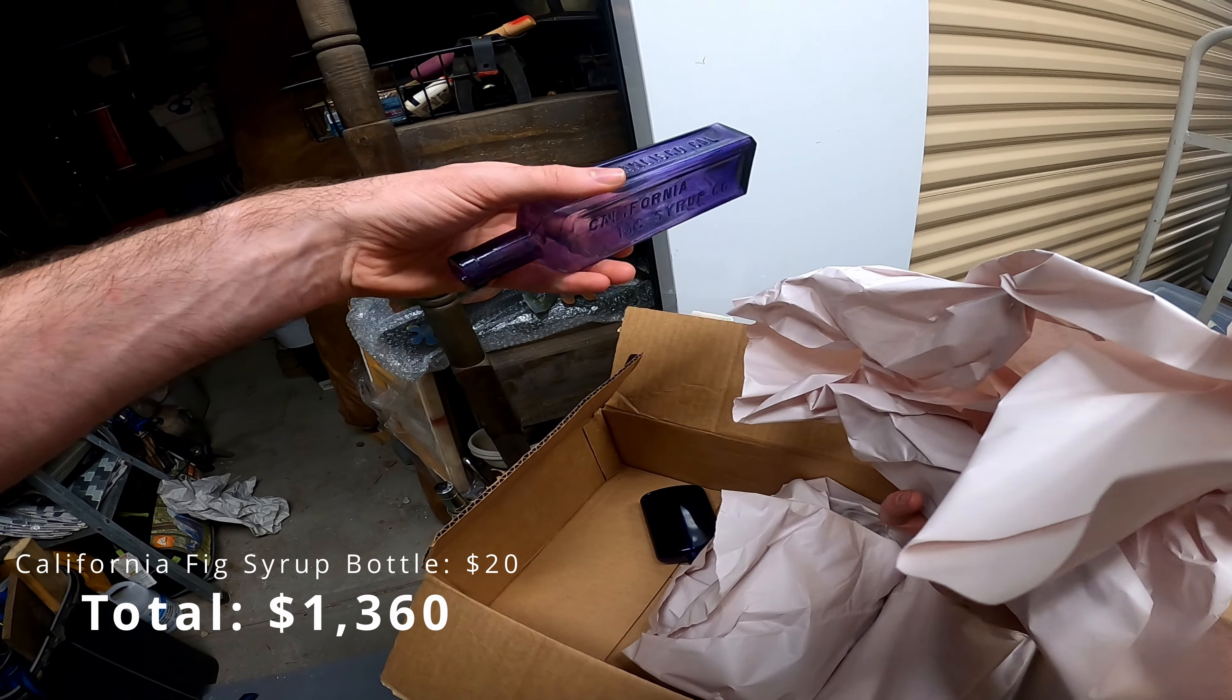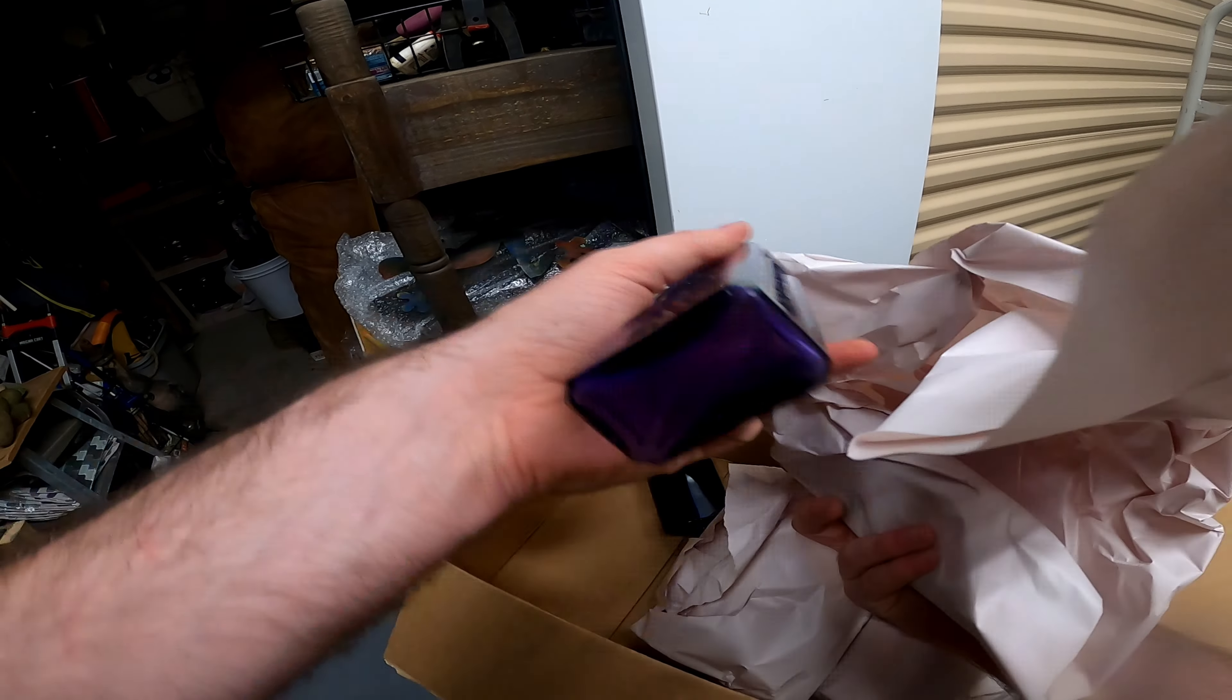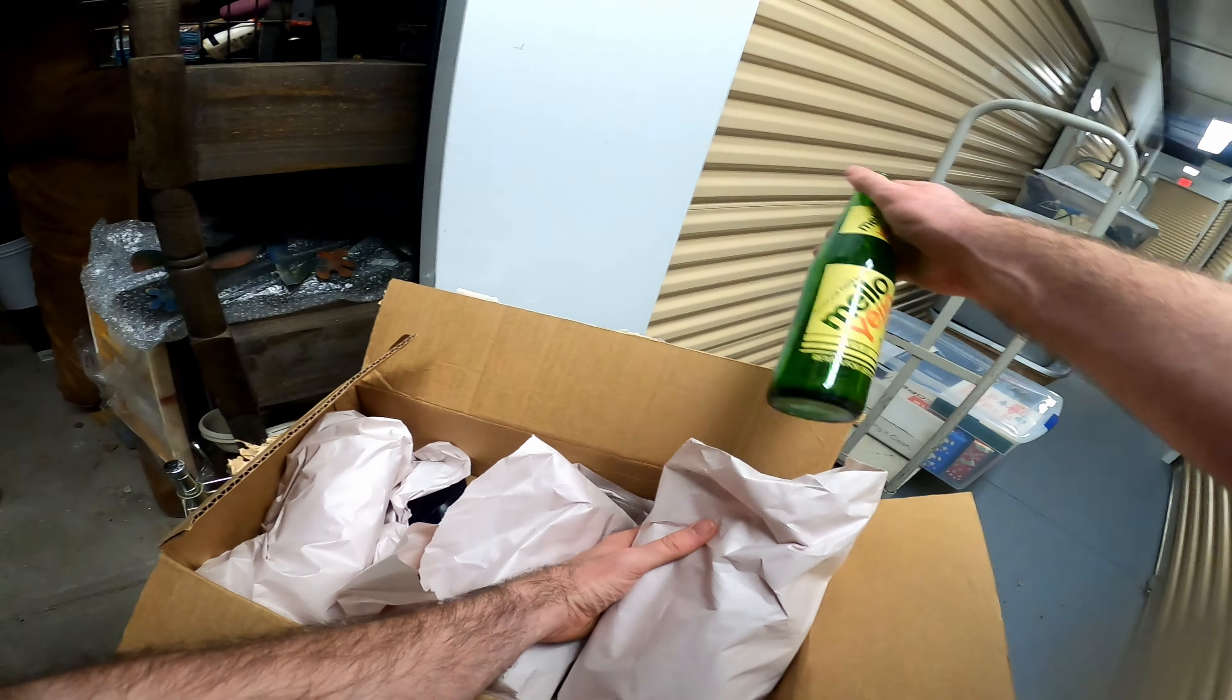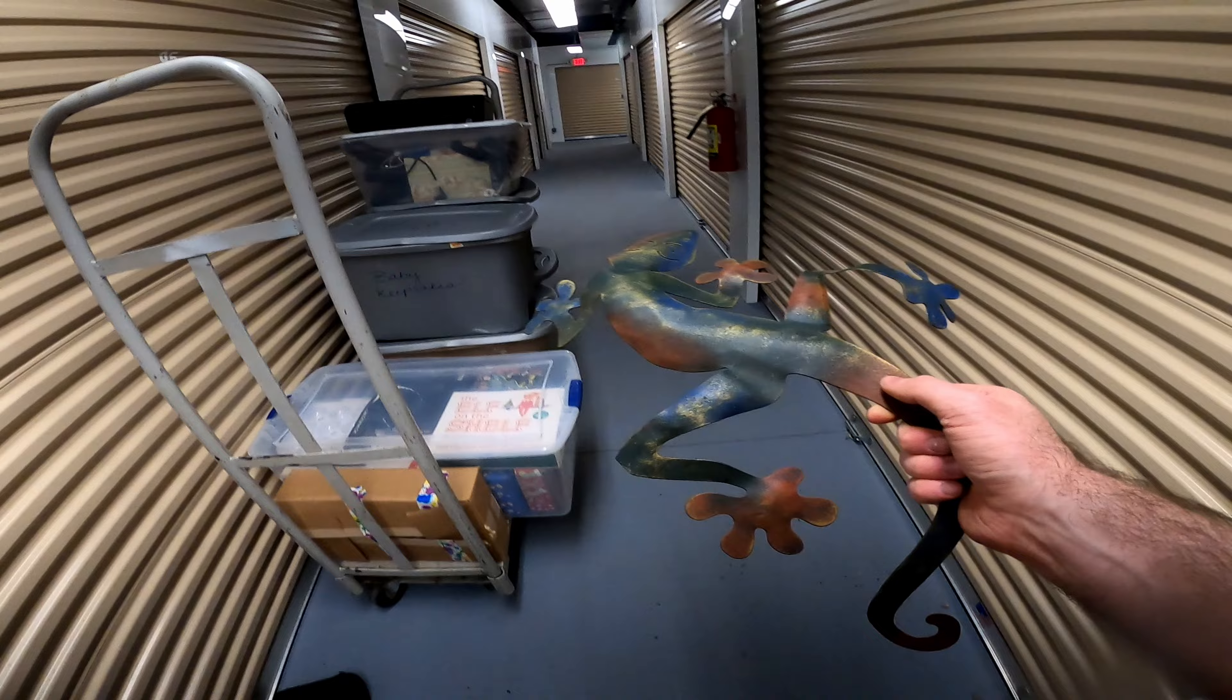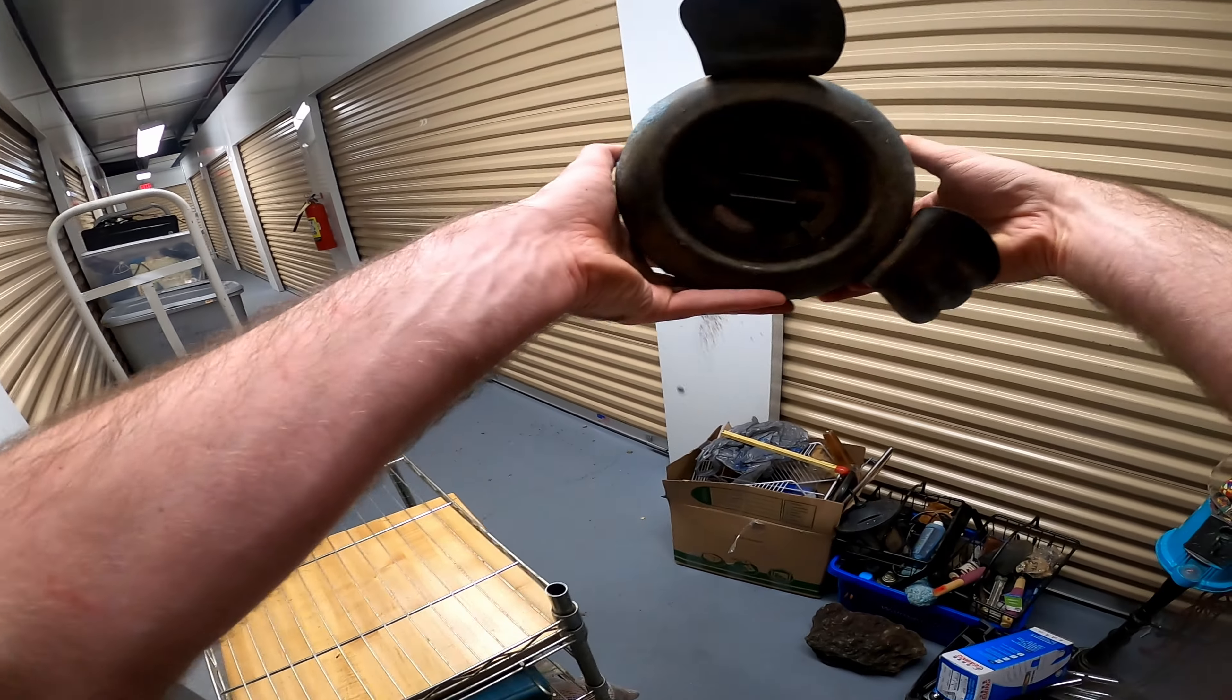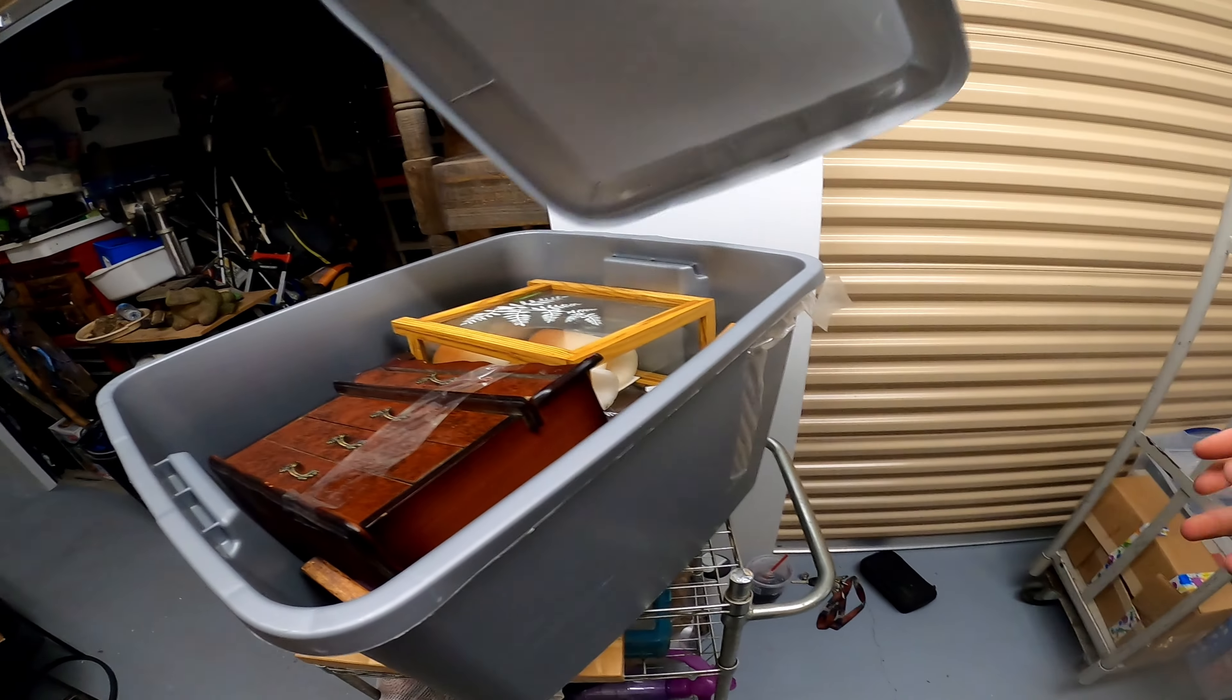California fig syrup. Oh, another yellow bottle. Wizard. King frog. It's got dust and dirt in them. Okay, so I'm essentially good to move that one out. Oh, okay, it's taped.